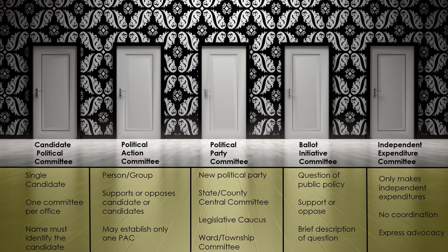The next committee designation is a ballot initiative committee — a committee formed by a person or group to support or oppose a question of public policy to be placed on the ballot. The name of a ballot initiative committee has to include a brief description of the public policy question and whether the committee is supporting or opposing it. The last committee designation is for independent expenditure committees, formed for the purpose of making independent expenditures in support of or in opposition to any public official, candidate, or question of public policy to be submitted to the voters. Independent expenditure committees include groups that make electioneering communications that are not coordinated with a public official, candidate, or their campaigns.